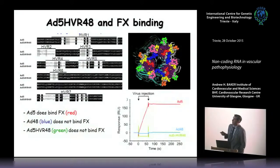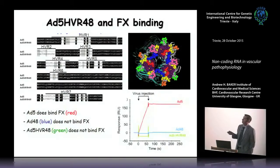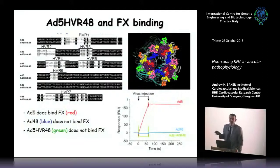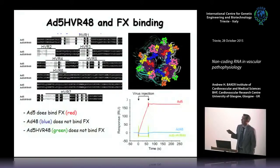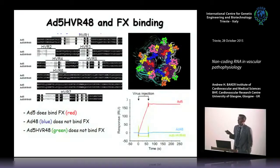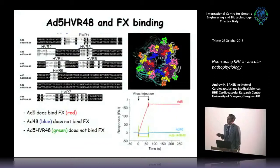We spend a lot of time modifying the hexon capsid protein. Looking down on the hexon, it's a trimeric structure — more complex than many viruses. These exposed regions are responsible for many pre-existing antibodies against adenovirus. We mutated these regions from adenovirus 5 to a serotype that doesn't bind factor X — adenovirus 48 — making both large mutations and point mutations.